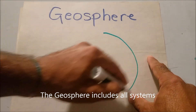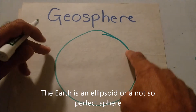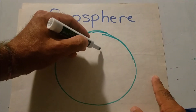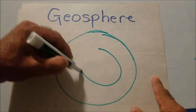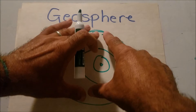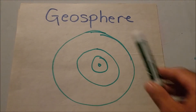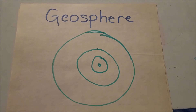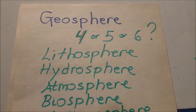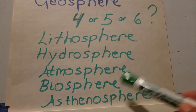If we draw the earth as a round ball — and it's not exactly a sphere because it has some bulges at the equator — we have the crust on top, then the mantle which is the largest part, and then the outer core and inner core. In this video we're going with what most scientists consider the geosphere: all the spheres together. There could be four, five, or six systems, and within each one there are sub-spheres.